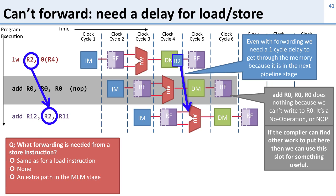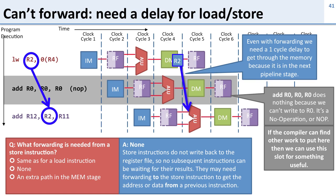What forwarding is needed from a store instruction? The answer is none. Store instructions don't write back to the register file, so no instructions after them need to get the results of the store. You may need forwarding to a store instruction to provide the address or data from a previous instruction, but you don't need to forward the results of store instructions because they don't write to the register file.